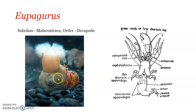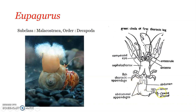For protection, hermit crabs use discarded gastropod molluscan shells or structures from other animals. Morphologically, Eupagurus is more related to lobsters than to true crabs. The hermit crabs have a curled tail with a hook-like structure at the end, enabling their body to fit inside the gastropod shell. The abdominal appendages are present only on one side - absent on the right side and highly reduced on the left. The last pair of abdominal appendages forms uropods that are hooked and adapted to cling inside the shell.